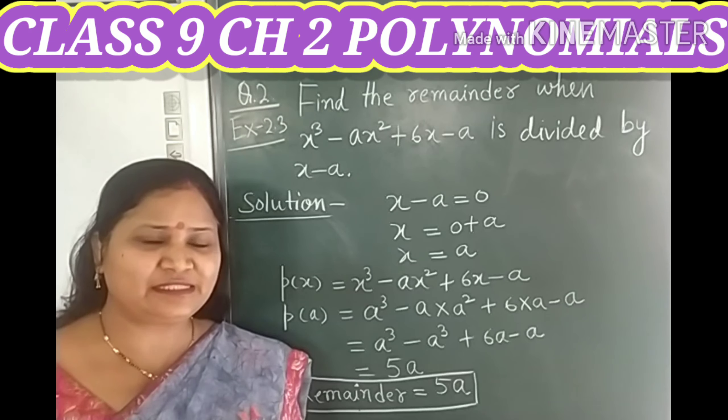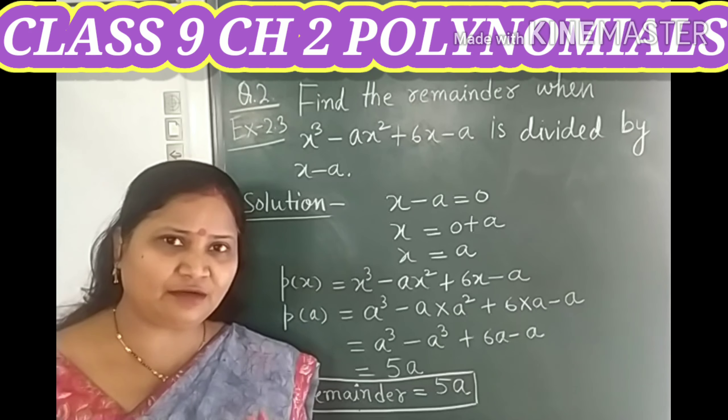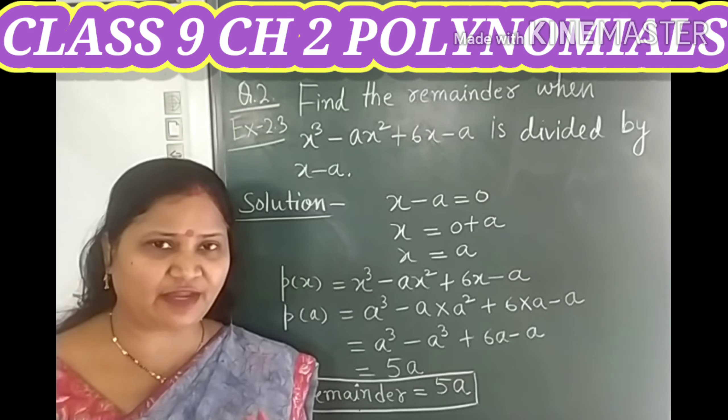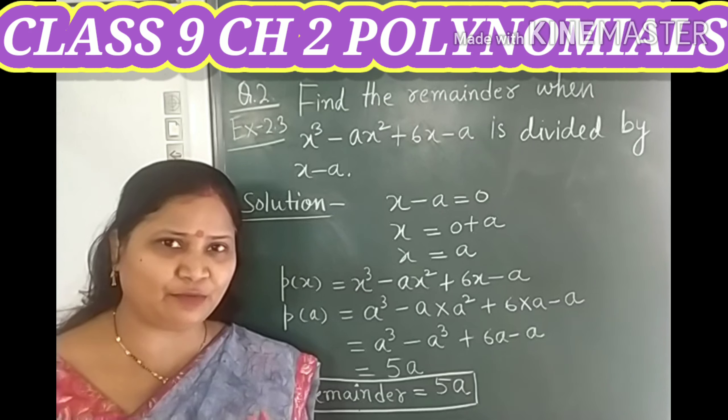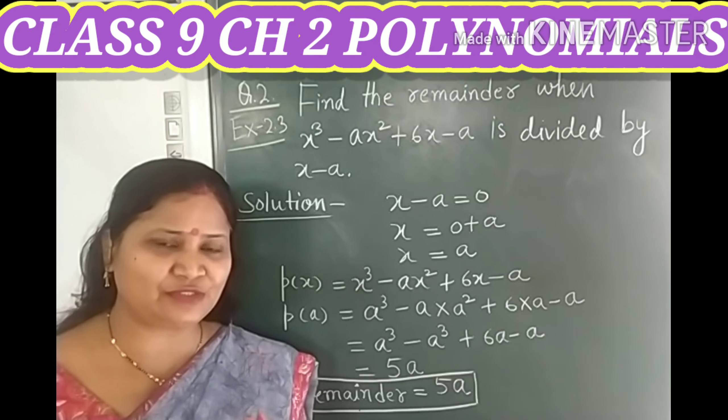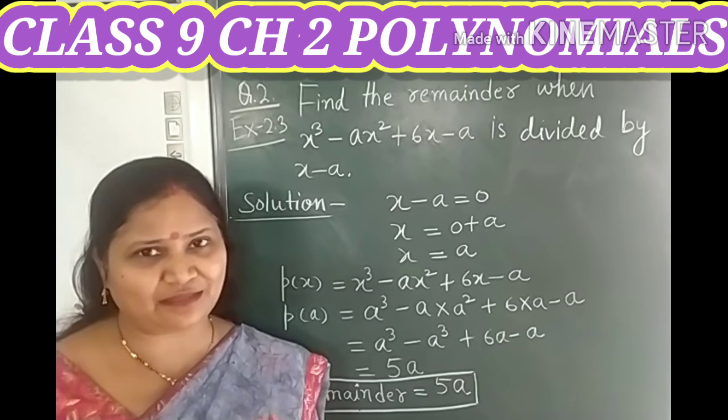So children, just keep in your mind, if you are to find the remainder only, then you can use remainder theorem. But if you are to find quotient and remainder both, then you can't find it by remainder theorem. You can just use long division method to find quotient and remainder.